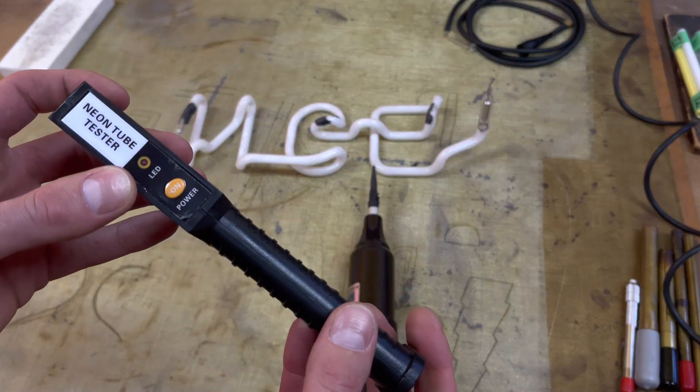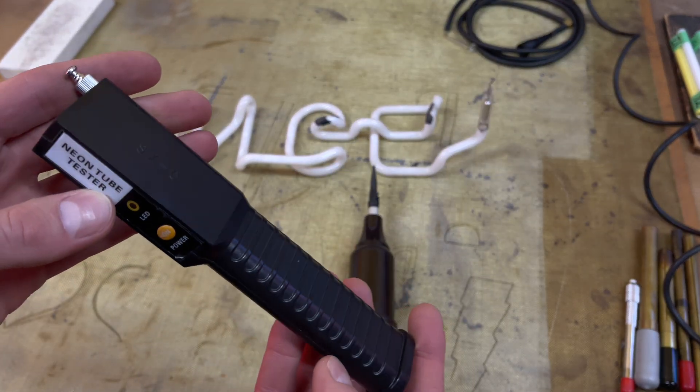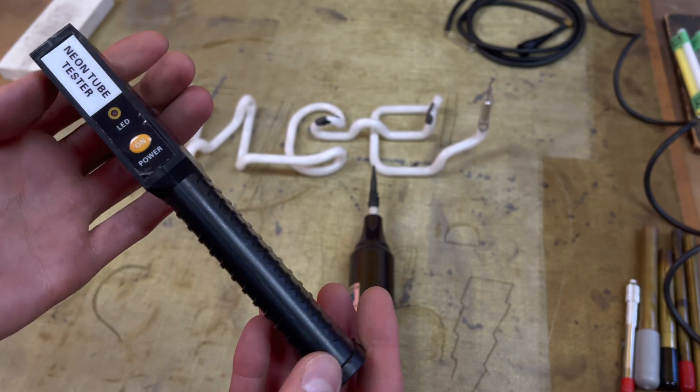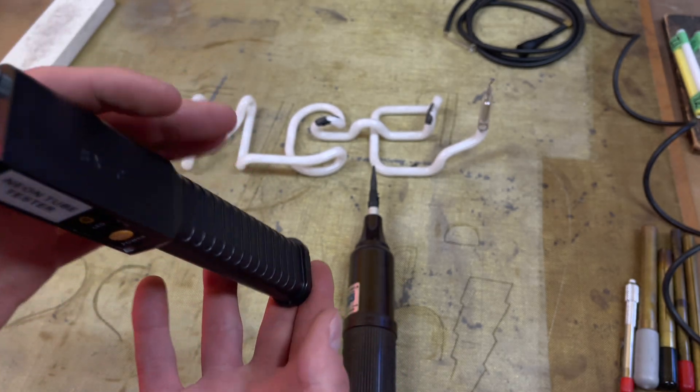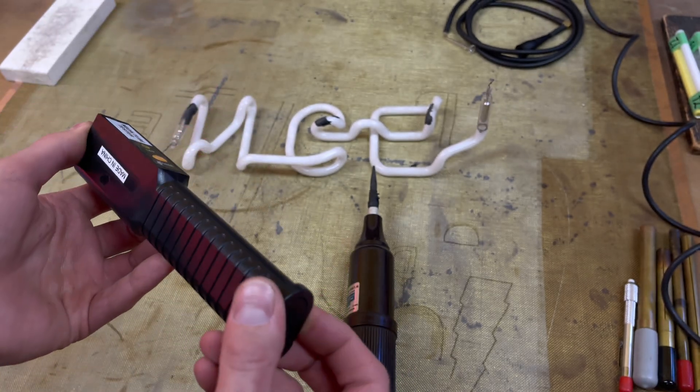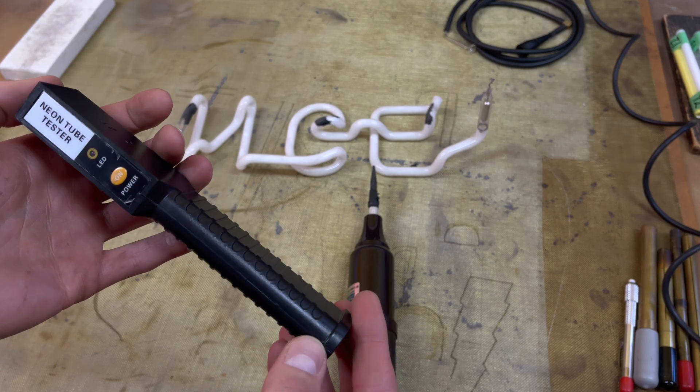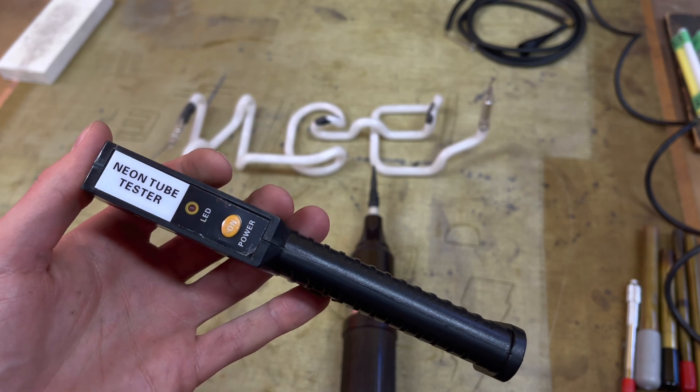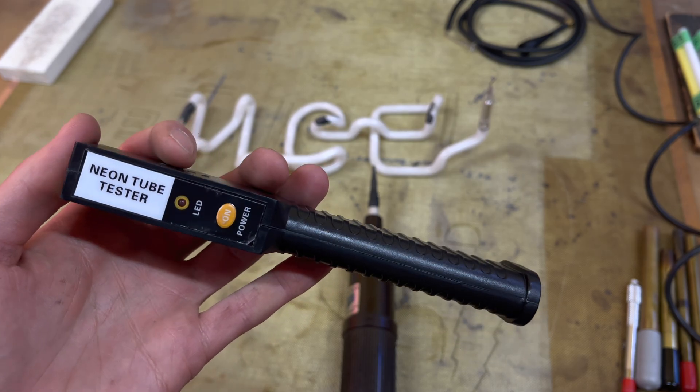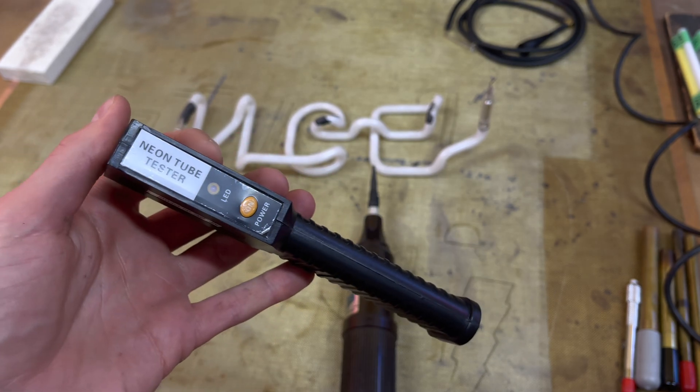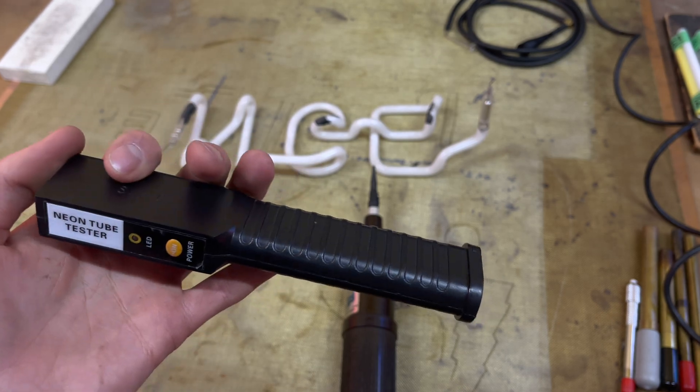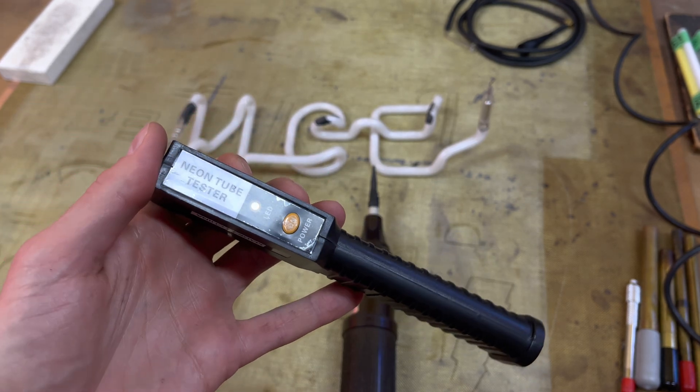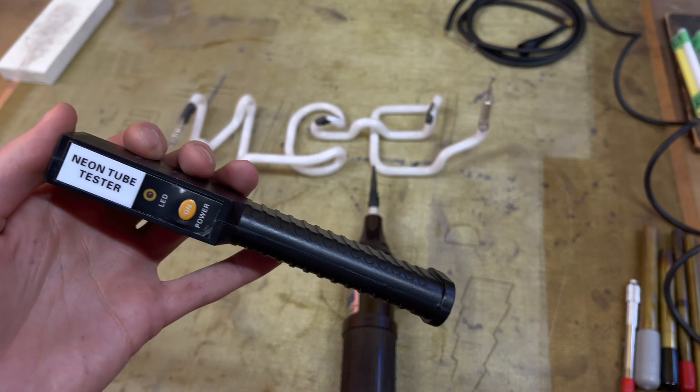They're kind of difficult to see in bright sunlight so that's something to keep in mind, but they do have the advantage of being quite portable. You could stick this in your pocket and take it with you to a flea market or Craigslist meetup and see if there's a broken neon sign. You can test which tubes are good, maybe kind of base your bid on that sort of thing.